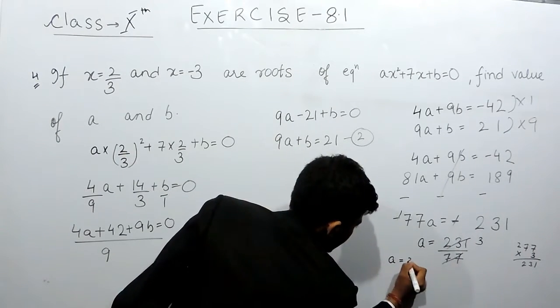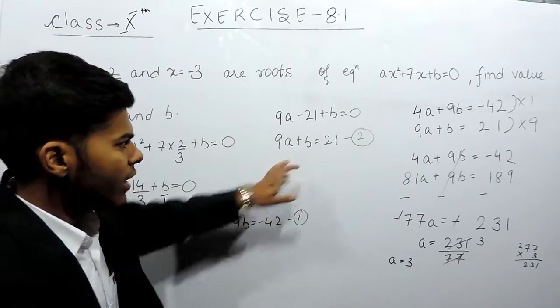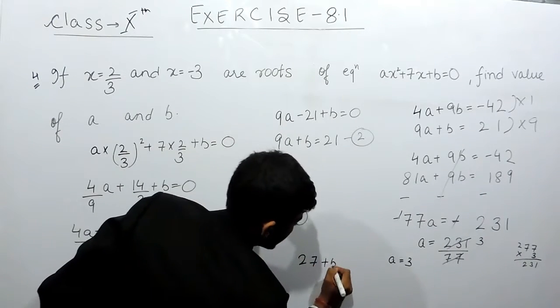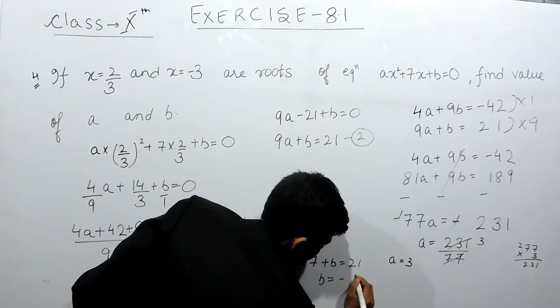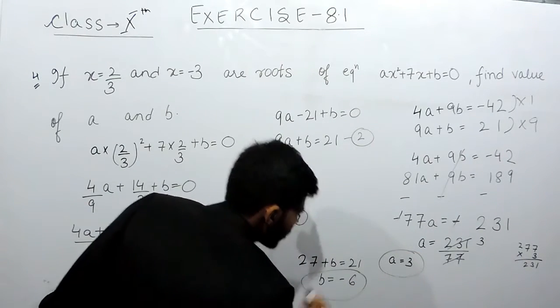Now if a is 3, in this equation we will substitute the value of a. 9 3 times 27 plus b equals to 21, so b will be equals to minus 6. So this is the value of a and this is the value of b.